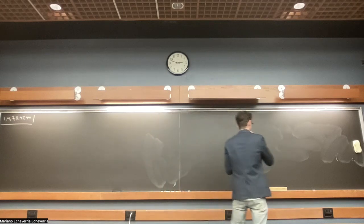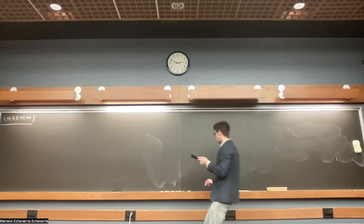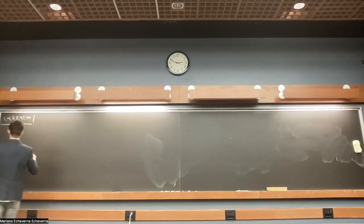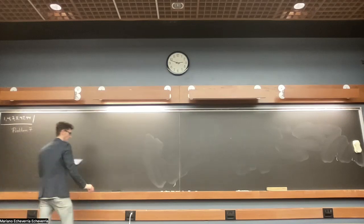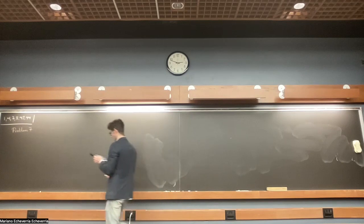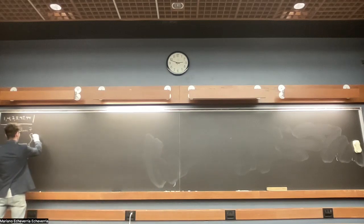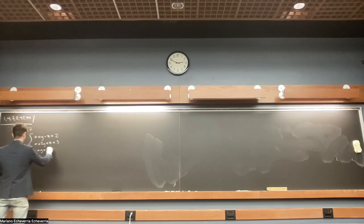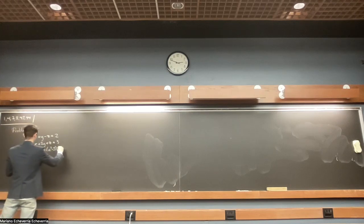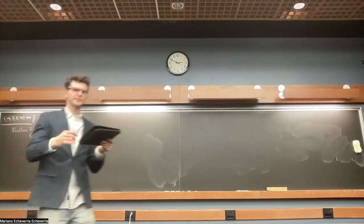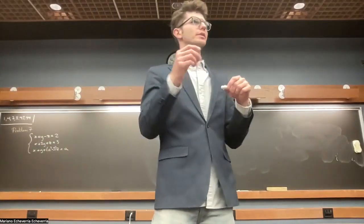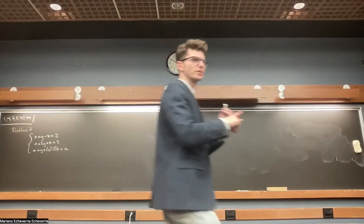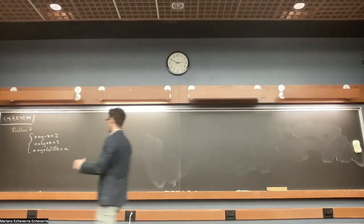Let's start with problem seven because that one is useful — I think there was a similar one in one of the assignments this week. The system depends on a, so the idea is to determine in terms of a when the system has no solutions, infinite solutions, or a unique solution.